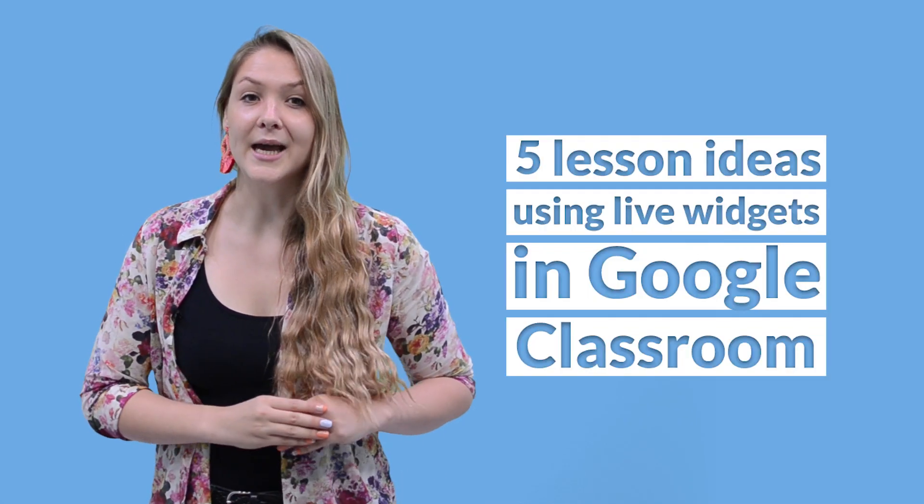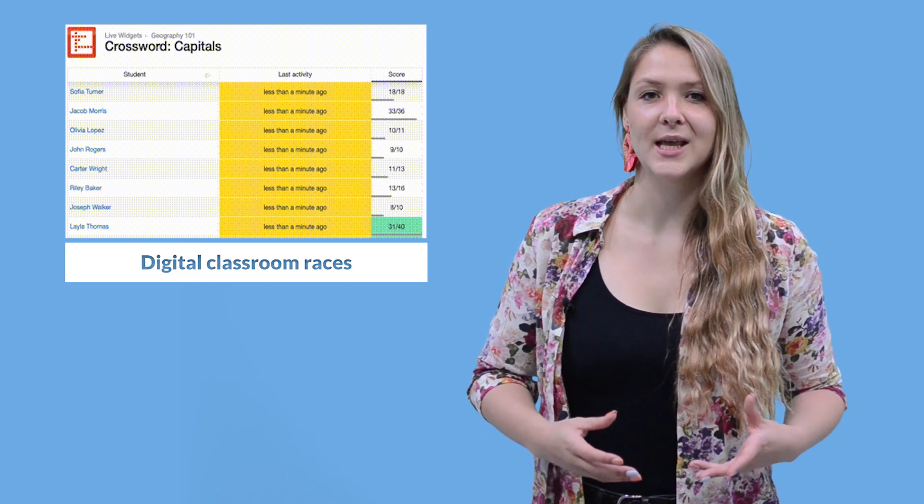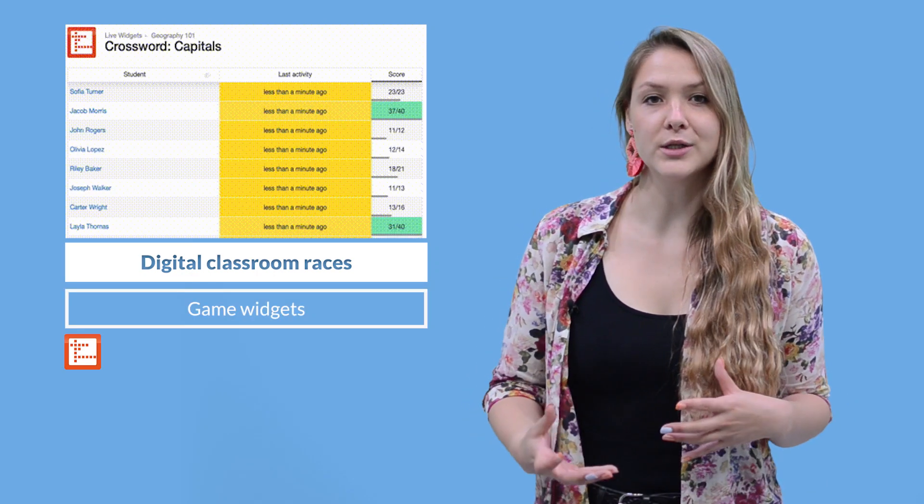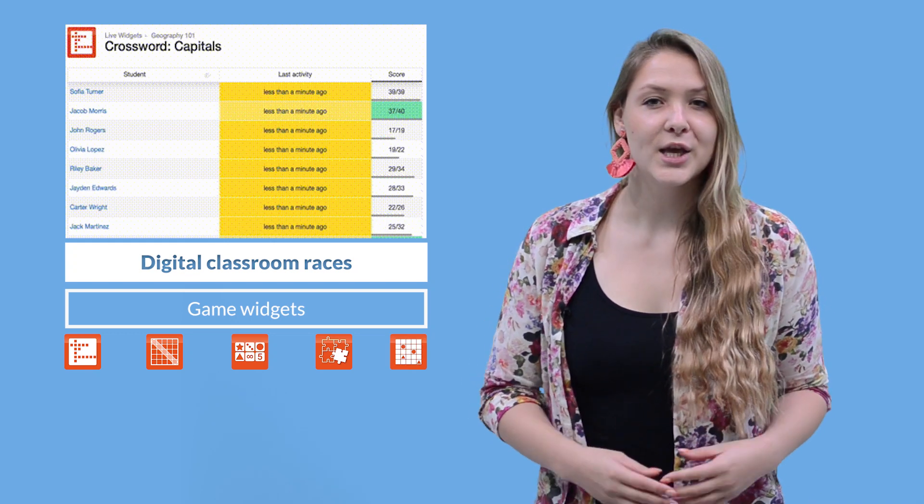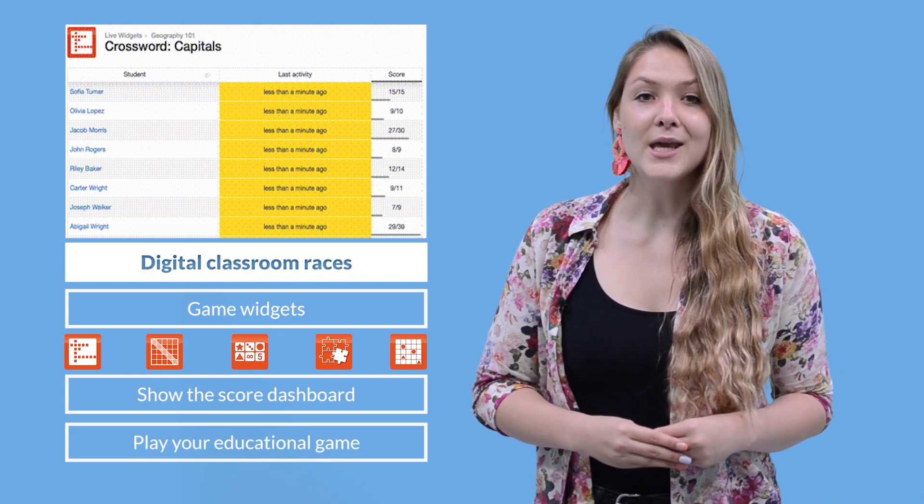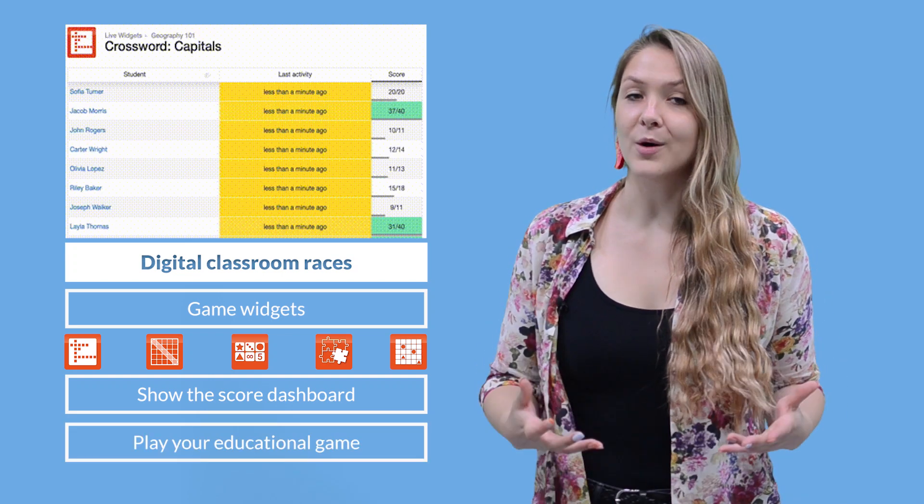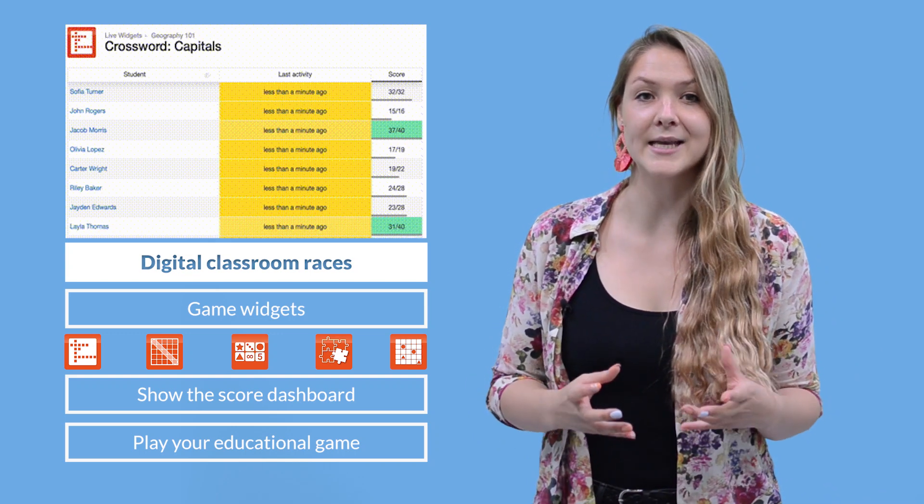Here are five lesson ideas using Live Widgets in Google Classroom. One, hold digital classroom races. Use game widgets such as crossword, word search, pair matching, jigsaw and memory widgets to hold races. Show the score dashboard of Live Widgets to your students and let them play your educational game. Optionally blur the names and pick out the winner to classically correct the answers in the game.